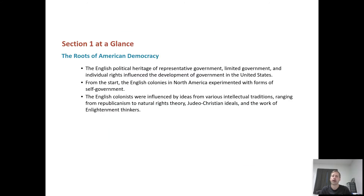Section one is all about the roots of American democracy. How did England influence us? They influenced us with the ideas of representative government, limited government, and individual rights. We're going to look at the colonies and how they tried different ideas. And then we're going to look at intellectual traditions — the idea of republicanism, natural rights, religious influences, and most importantly, the Enlightenment.